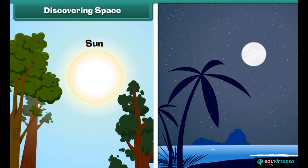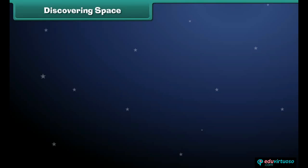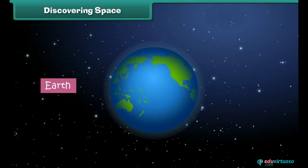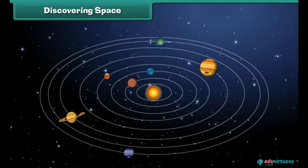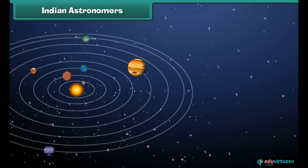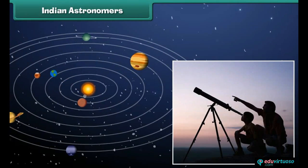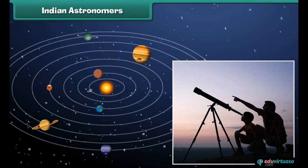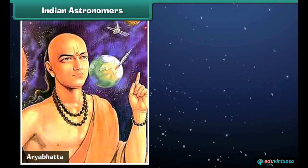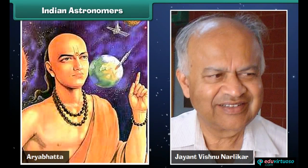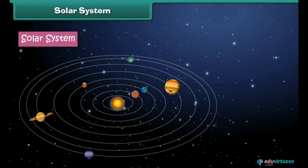Discovering space: the Sun, Moon, and stars that we see in the sky are all located in space. The Earth on which we live is also in space. Everything from the small dust particle to the large planet is placed in space. An astronomer is a person who studies stars and planets, using a telescope for study. Bhaskaracharya, Aryabhata, and Jayant Vishnu Narlikar are some well-known Indian astronomers.